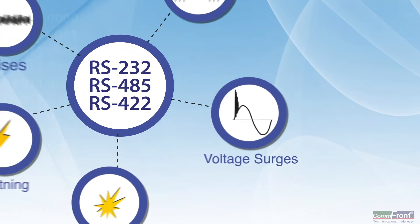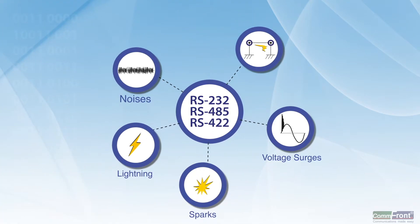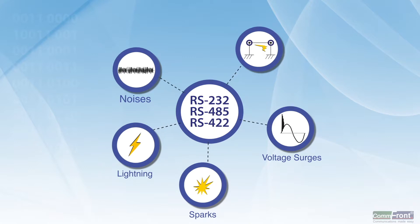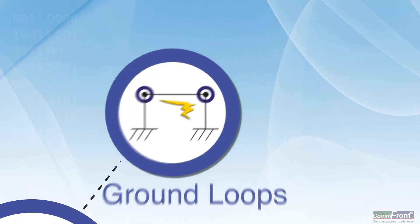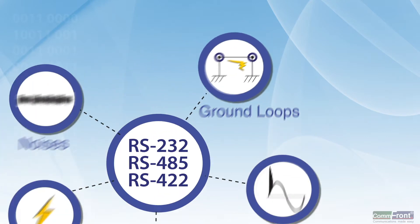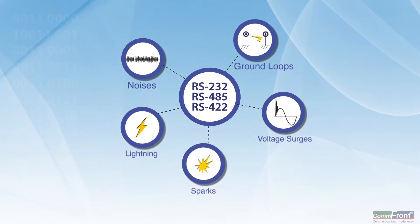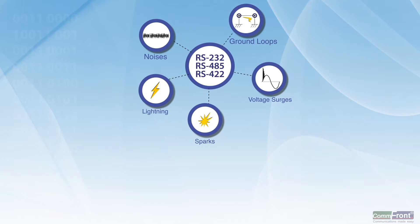Second, because the ground potential at different nodes could be different, significant ground currents could flow through the path of least resistance via the common earth ground, causing the ground loops problem. There are a few methods of voltage and current surge protection in the industry.